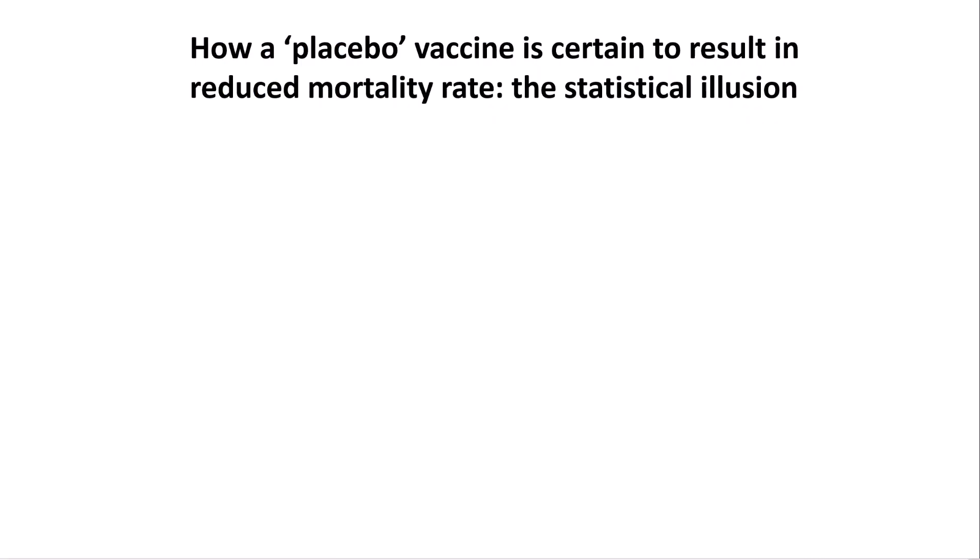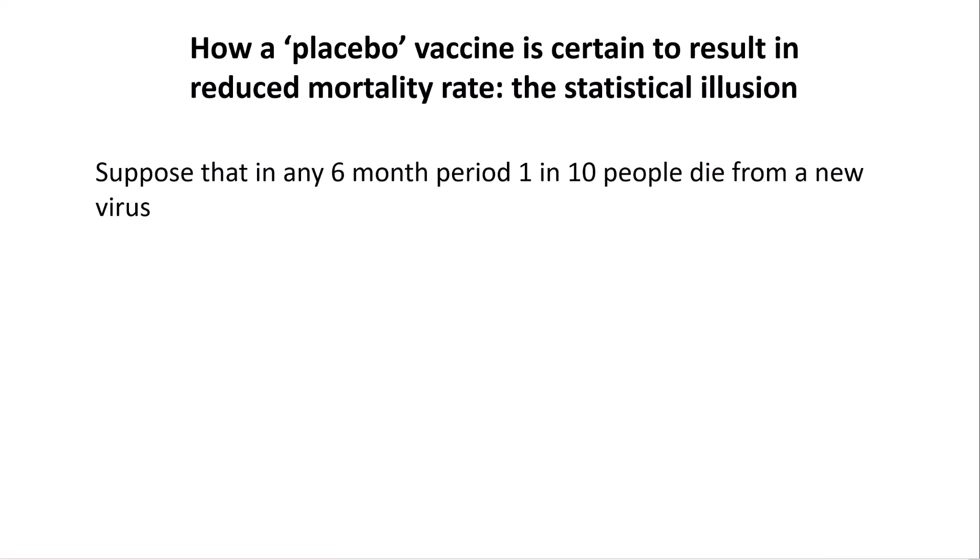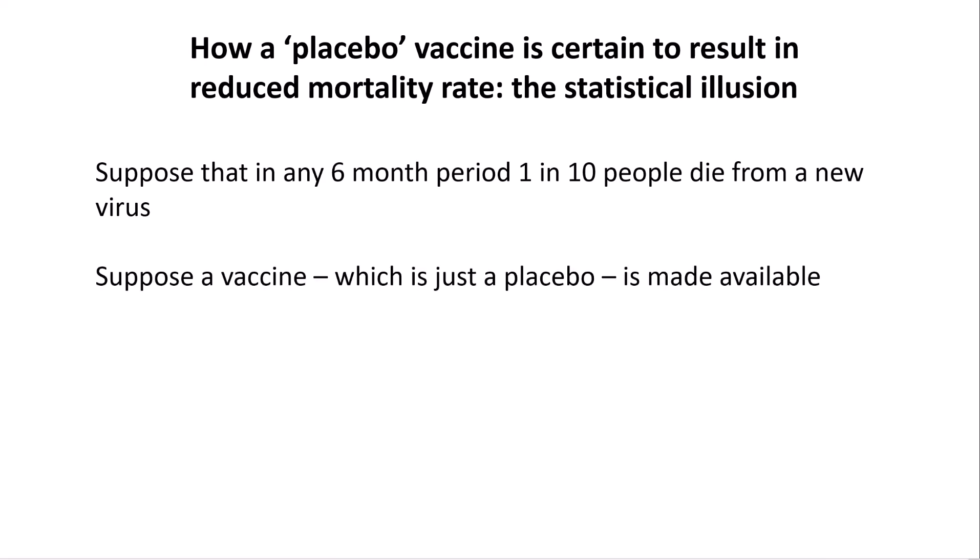This simple example is going to demonstrate how a vaccine, which is just a placebo — so it has no impact whatsoever whether you get it or not — is certain to result in a reduced mortality rate for those who get it, but it's a pure statistical illusion. We're going to suppose that in any six-month period, one in ten people die from some new deadly virus. And suppose a vaccine, which is just a placebo, is made available — so it doesn't matter whether you get it or not, it's still the case that one in ten people in any six-month period are going to die from the virus.